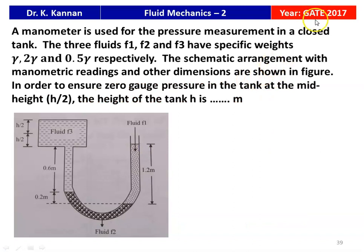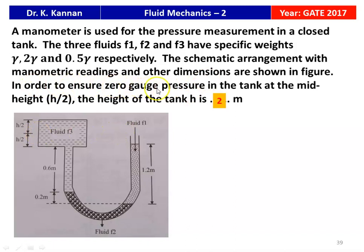The next question is from the 2017 GATE question paper: a manometer is used for pressure measurement in a closed tank. Three fluids F1, F2, F3 have specific weights gamma, 2 gamma, and 0.5 gamma respectively. In order to ensure zero gauge pressure in the tank at the mid-height h/2, what should be the height h of the tank in meters? One fluid column is 0.6 meters in height. The answer is 2 meters.